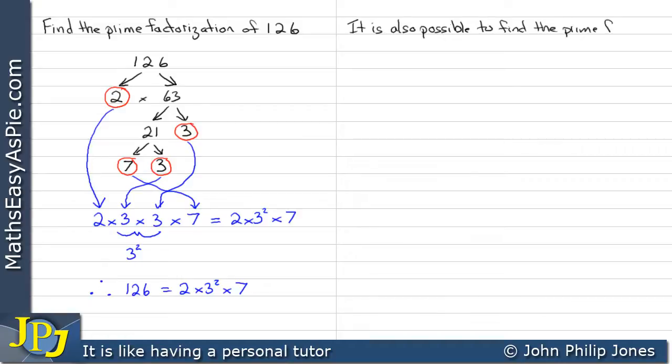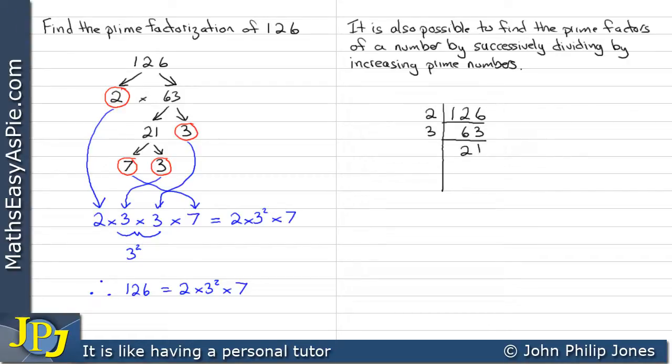It is also possible to find the prime factors of a number by successively dividing by increasing prime numbers. Let's take the 126, and you build up a little table here, and then you say, well, 2 will go into it 63 times. 2 won't go into 63, so we choose 3, which is the next prime number. That goes in 21 times. We then choose 3 again. That will go into 21 7 times. Then we choose 7, because 7 will go into 7 once. 3 wouldn't go in. That's why we chose 7. We stop the division process when we arrive at 1 here, when we have a division that ends up with us having a 1 in this part of the table.